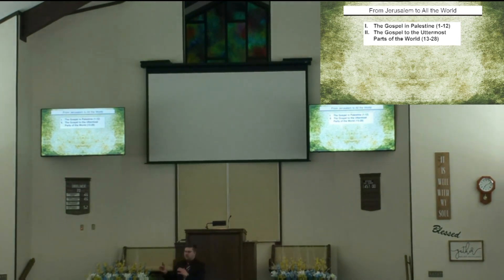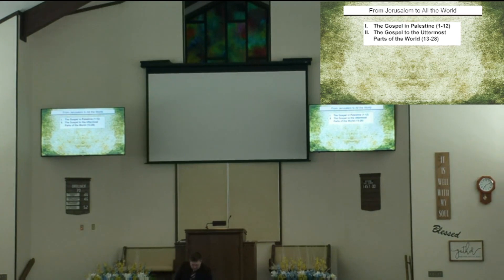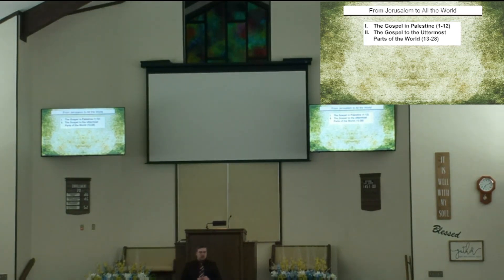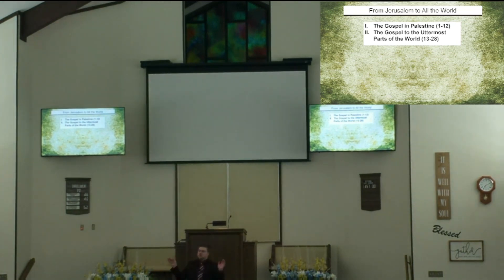The first journey is chapters 13 through 14. Chapter 15 covers the discussion about circumcision. You can look at the subsections on page 7 of your workbook. The second journey is chapters 16 through 18, the third journey is 19 through 20. Then in chapter 21, we have Paul's trials and journey to Rome. Chapters 21 through the end cover the trials and journey to Rome.